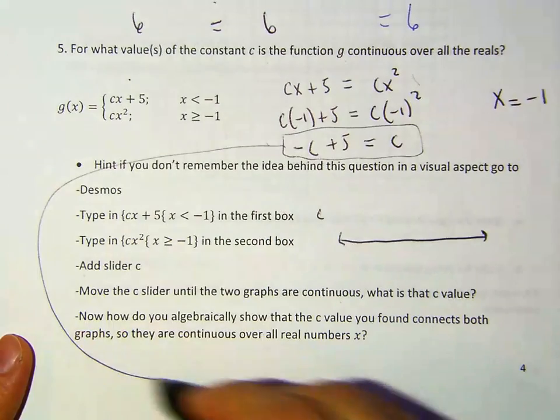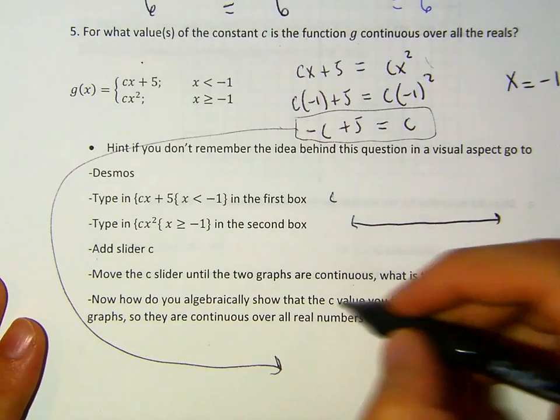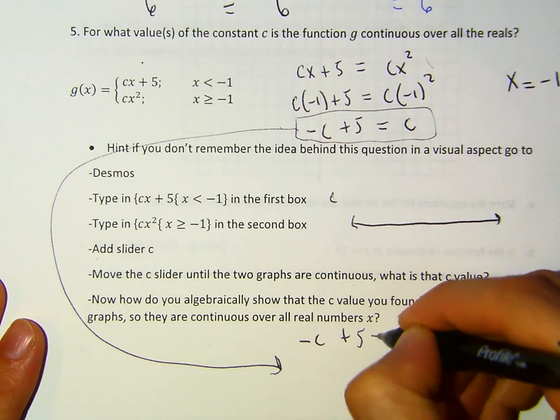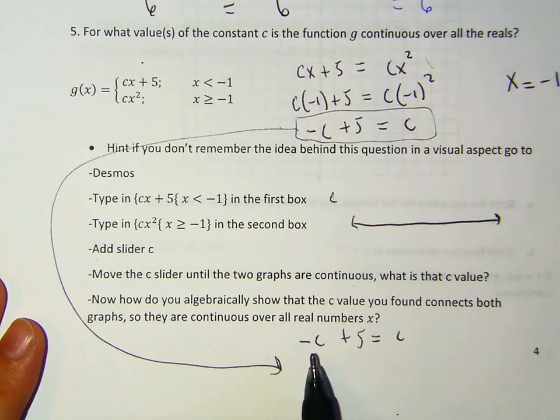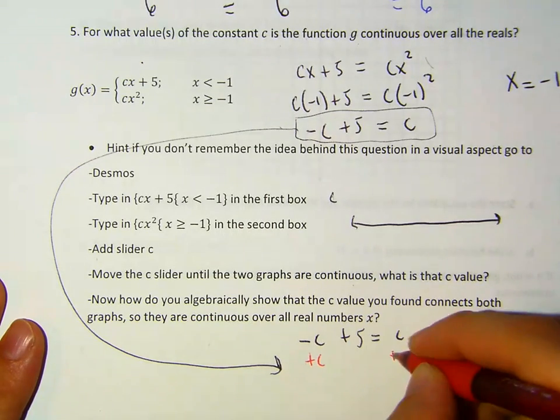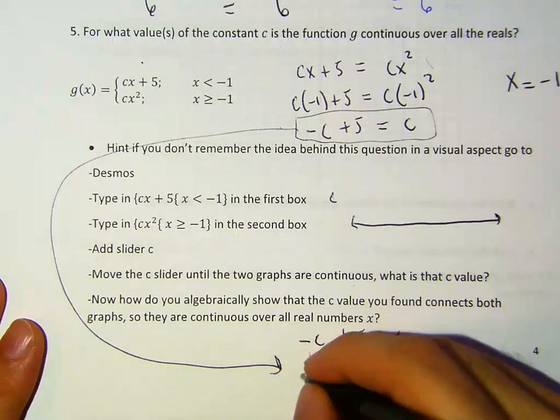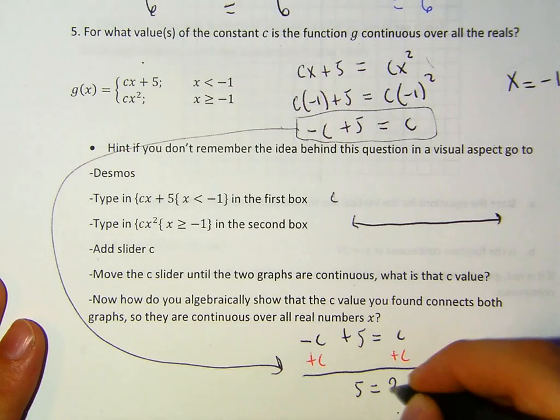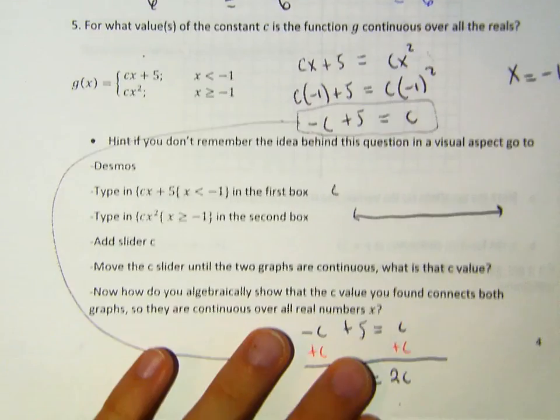So it's actually pretty quick. So this just becomes C times negative one plus five equals C times negative one squared. So then this becomes negative C plus five equals C. And then now that you have this, let me, I don't have much space. I'm just going to put it over here. So now you have negative C plus five equals C.